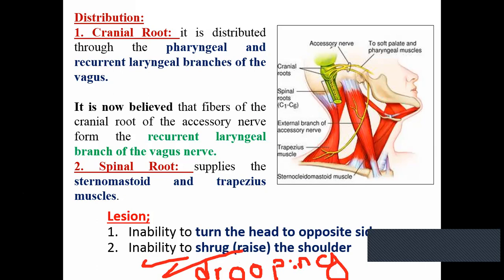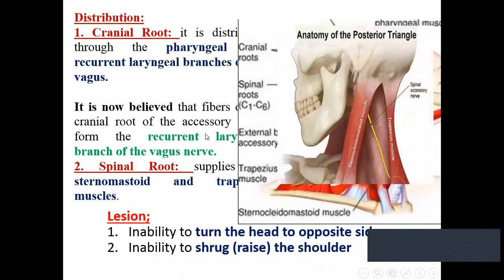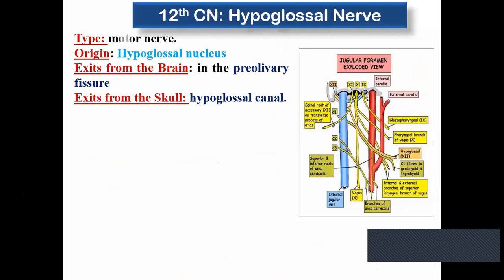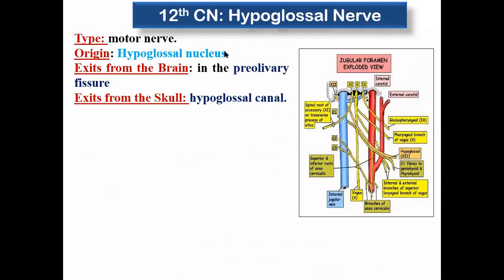We go now to the last cranial nerve — the hypoglossal nerve, number 12. Very easy story: from its name, glossal means tongue. It is the motor supply of the tongue — motor only. It arises from the pre-olivary fissure, from the hypoglossal nucleus in the medulla, and exits the skull from the hypoglossal canal in the posterior cranial fossa.